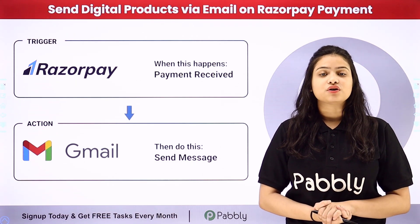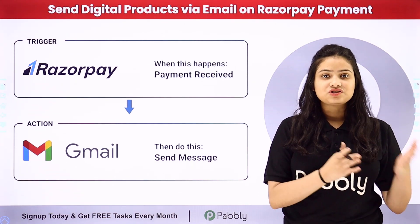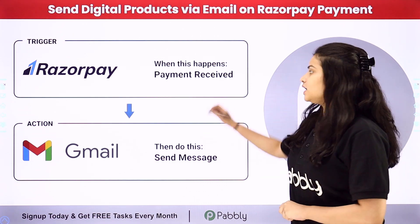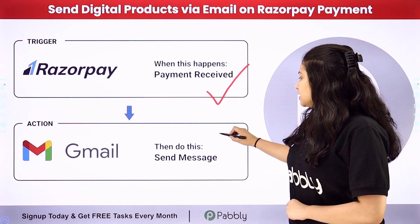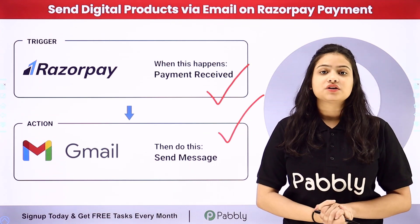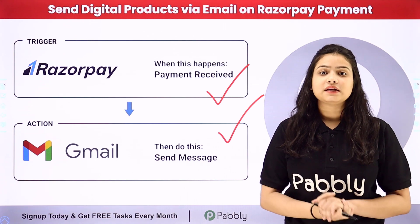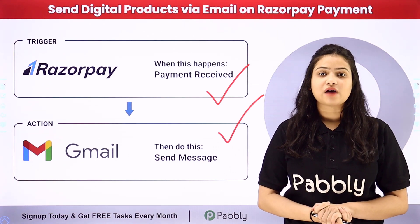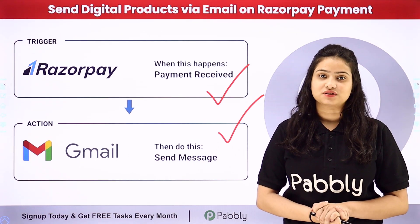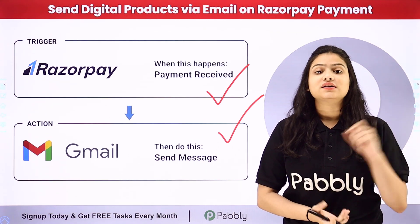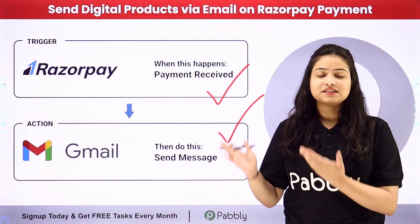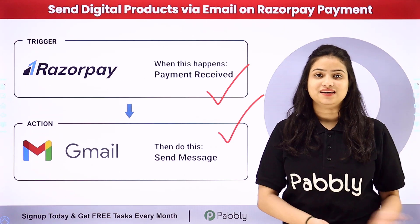Pabbly Connect works on two principles: Trigger and Action. In Trigger we are going to take Razorpay, and in Action we are going to take Gmail. We will simply set up a connection between these two applications with the help of Pabbly Connect to automate this entire process. To learn this entire automation step by step, let me take you to my screen.